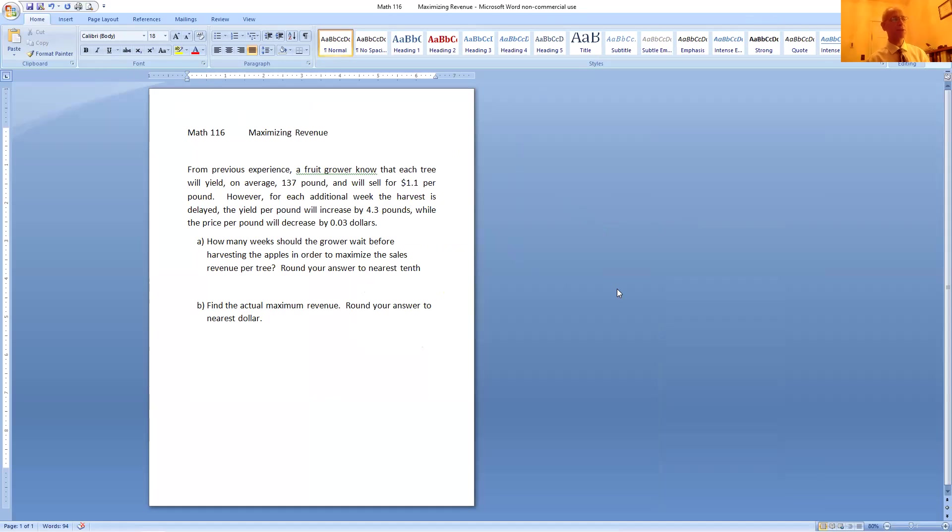From previous experience, a fruit grower knows that each tree will yield an average of 137 pounds and will sell for one dollar and 10 cents per pound. However, for each additional week the harvest is delayed, the yield per pound will increase by 4.3 pounds while the price per pound will decrease by three pennies, $0.03.